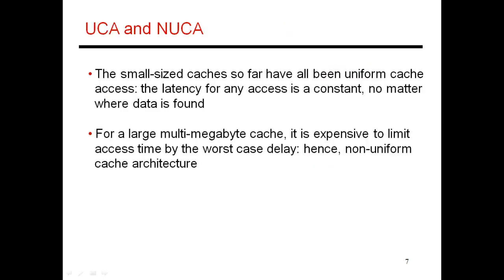Before I present the design, I also wanted to introduce the concept of a UCA versus a NUCA cache. UCA refers to uniform cache access, and this essentially describes all the L1 and L2 caches we've seen so far, where L1 takes one cycle access, L2 takes say 10 cycle access. Every lookup for the L2 is going to take 10 cycles, no matter where you find the data.